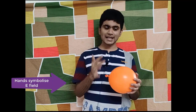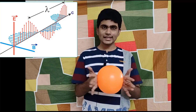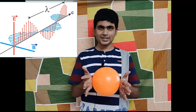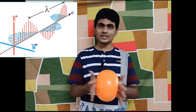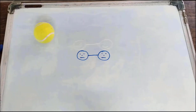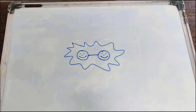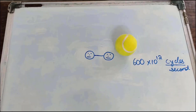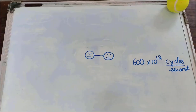Think of the electron cloud of the molecule as this balloon. Since light has an oscillating electric field, its induced dipole moment periodically changes, and soon enough it comes to rest, and light of the same frequency gets scattered out.